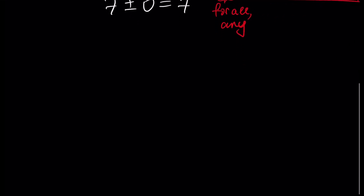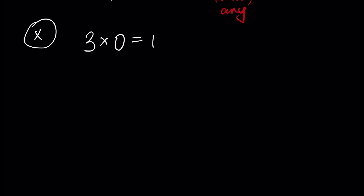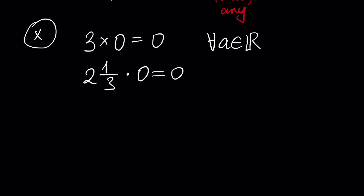The next operation is multiplication. Zero times any number always gives zero. For example, three times zero gives zero, and two and one-third times zero also gives zero. We can write generally: for any real number a, if we multiply our number by zero, the result is zero.